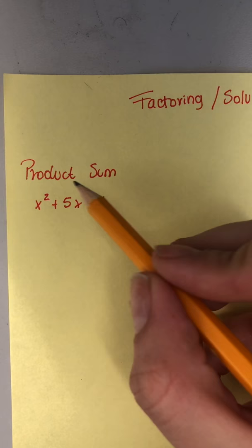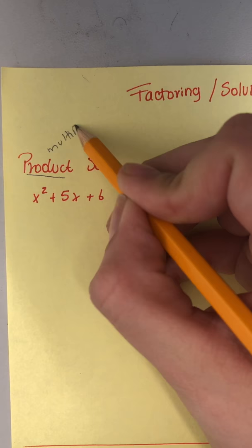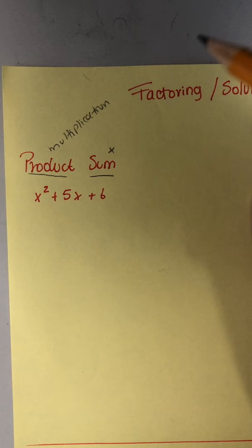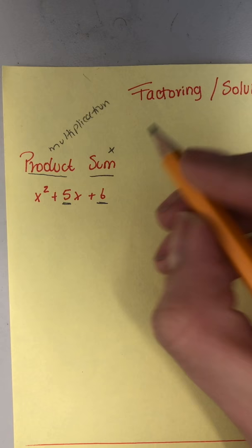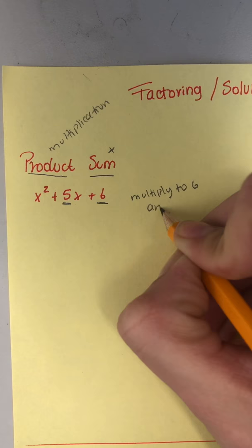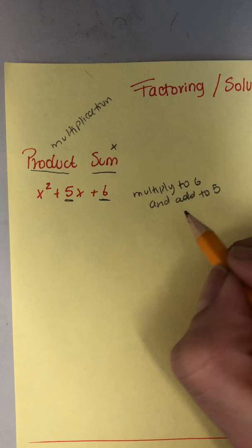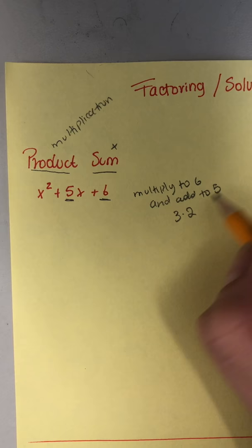First, to factor using product-sum, there's a reason why it's called product - it deals with multiplication - and sum - we're adding something as well. The way we think about it is two numbers that multiply to six and add to five.